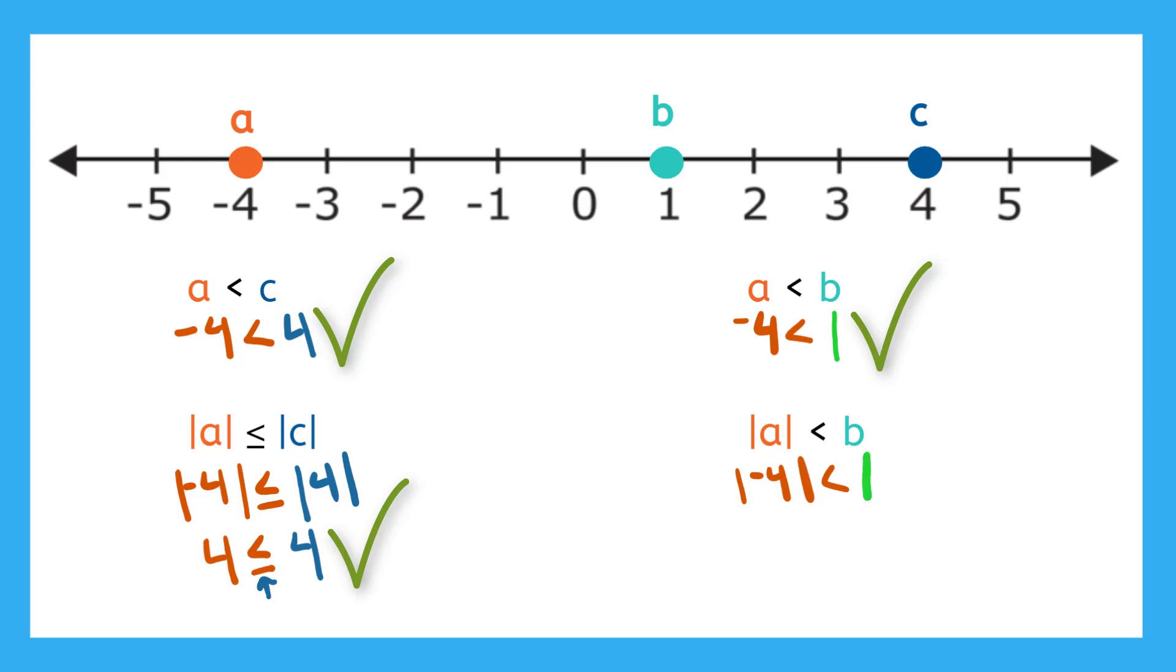So now here I'm going to solve my absolute value of A. I know the absolute value of negative four is four because it's just a distance of four from zero is less than my B is one. So is this true? Is four less than one? I don't think so, right? This statement is false.